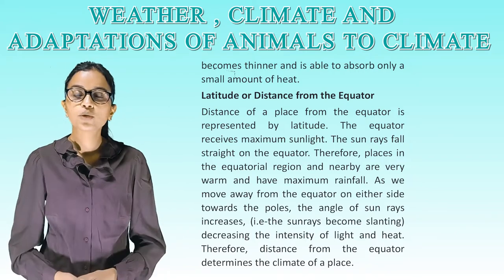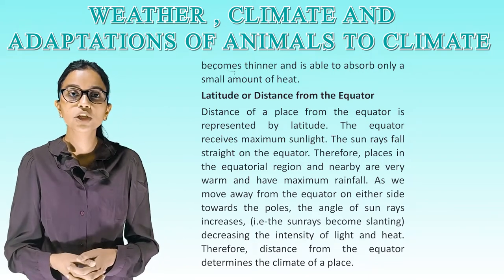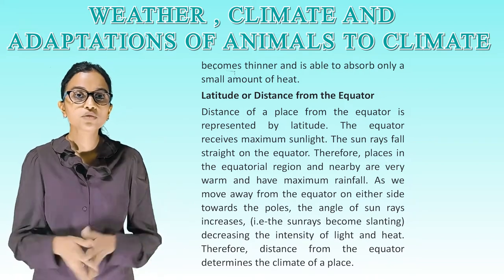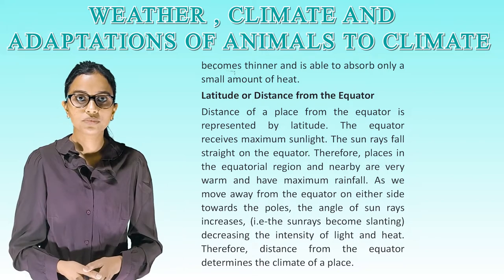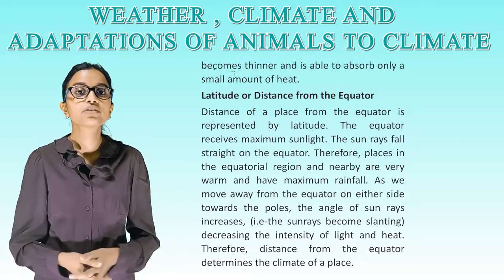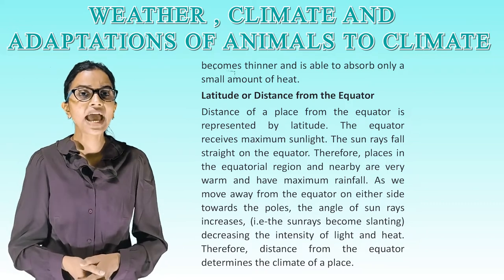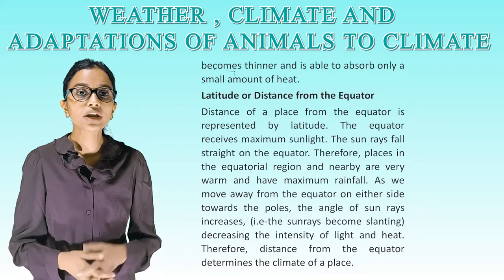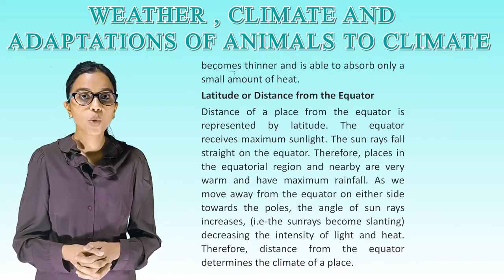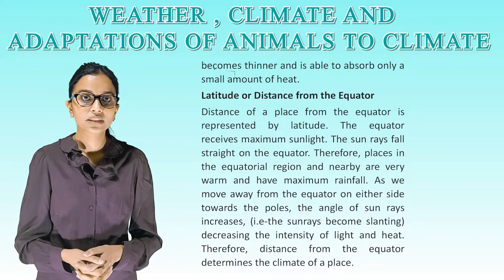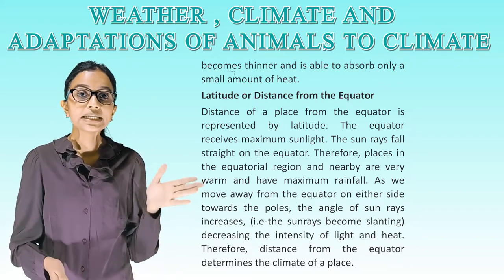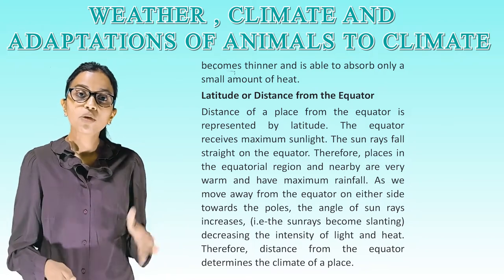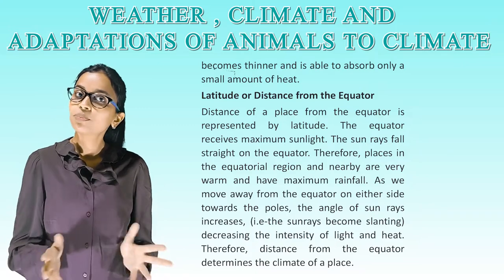Latitude or distance from the equator: the distance of a place from the equator is represented by latitude. The equator receives maximum sunlight as the sun's rays fall straight on it, so places in the equatorial region are very warm. As we move away from the equator towards the poles, the angle of sun rays increases — they become more slanting, decreasing the intensity of light and heat. Therefore, distance from the equator determines the climate of a place.